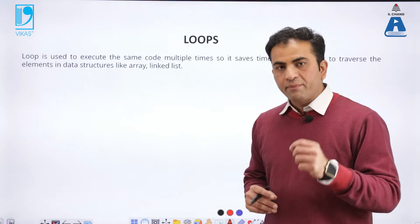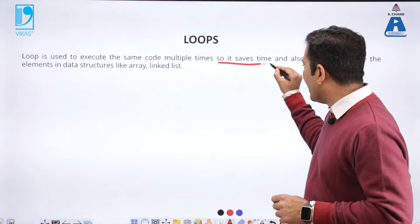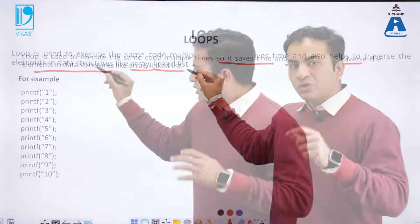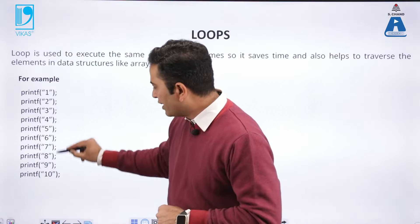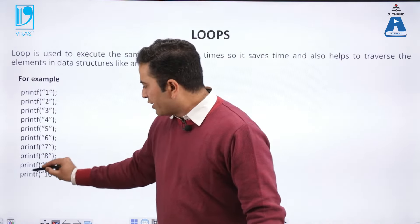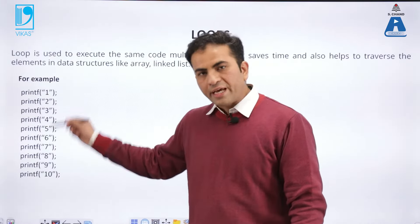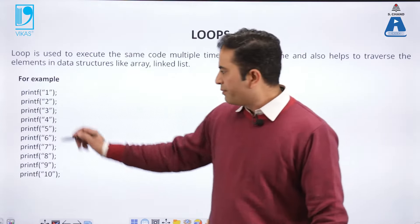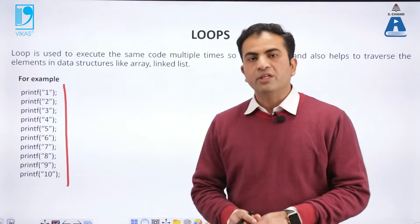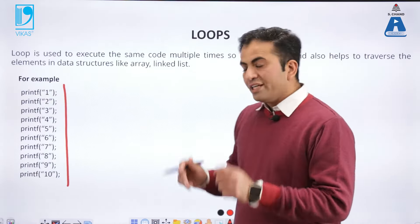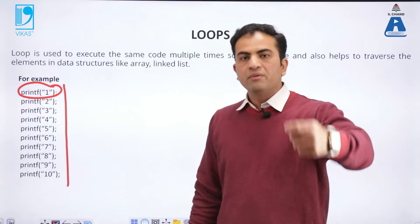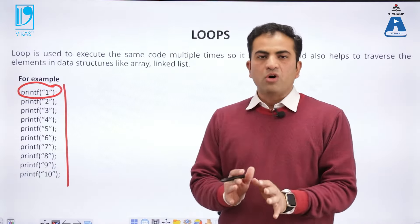A loop is used to execute the same code multiple times, saving time, and also helps to traverse elements in data structures like arrays and linked lists. For example, if we want to print numbers from 1 to 100, we would need to write 100 print statements — but that is not an optimum way. Using a loop, we write the statement only once and it runs multiple times. This is the concept of loops.